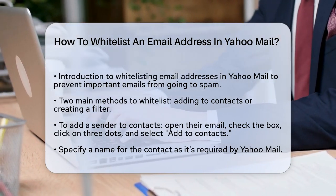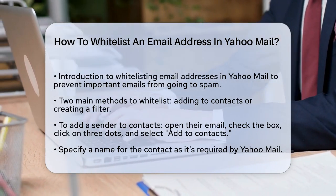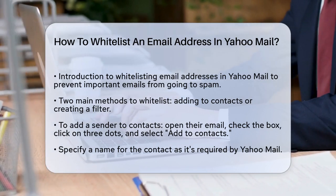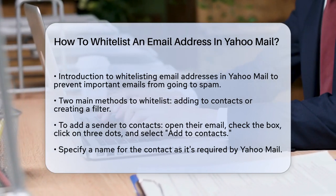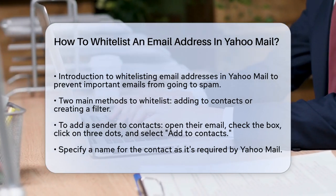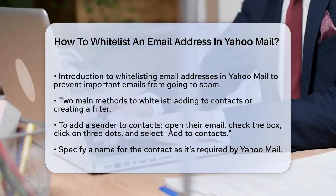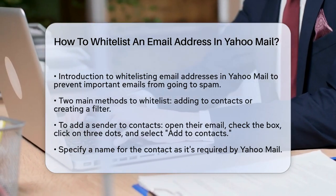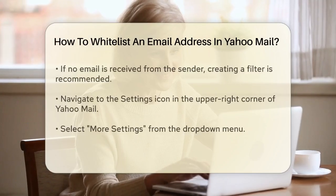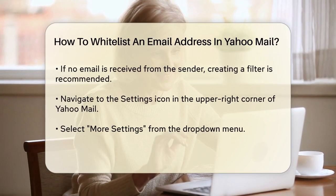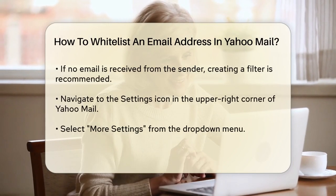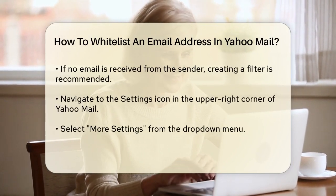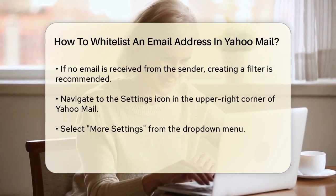When you receive an email from the sender you want to whitelist, open that email and check the box next to it. Then click on the three dots at the top and select Add to Contacts. You'll need to specify a name for this contact, which is a requirement in Yahoo Mail, unlike some other email services.